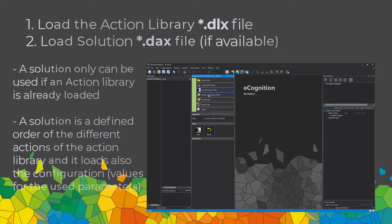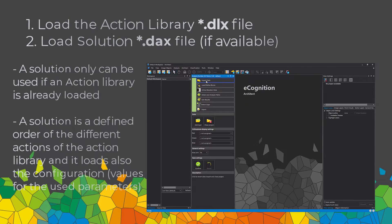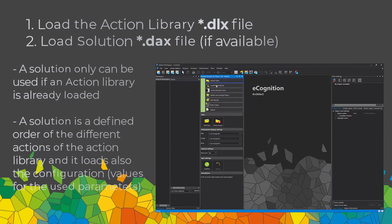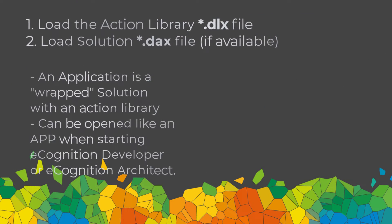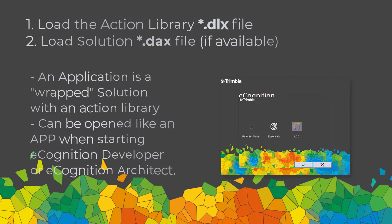You can also load the action library, add the actions, and sort them as you like. Depending on how the solution was saved, you can also move those actions around. Usually if you have a solution, it is a predefined workflow — it starts with loading data, then creating objects, and so on, as defined by the creator. An application is essentially a wrapped solution and action library.